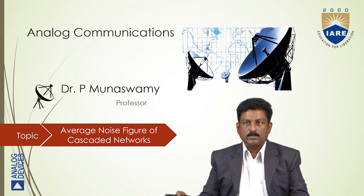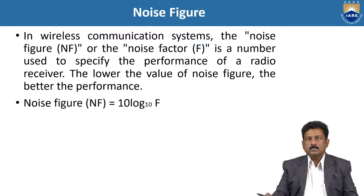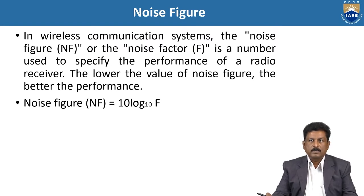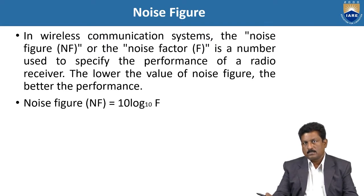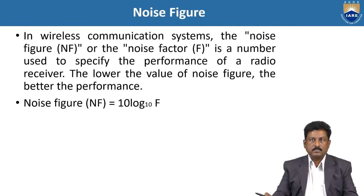In the wireless communication system, the noise figure NF, or noise factor F, is the number used to measure the performance of a radio receiver. The lower the value of the noise figure, the better the performance. Based on the two factors — noise figure NF and noise factor F — you can measure the performance of the receiver.